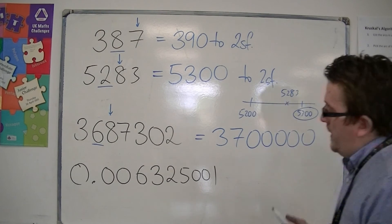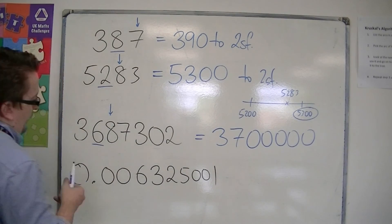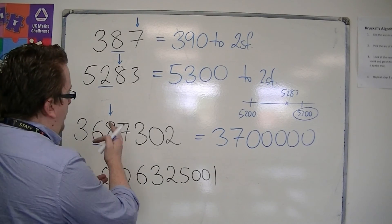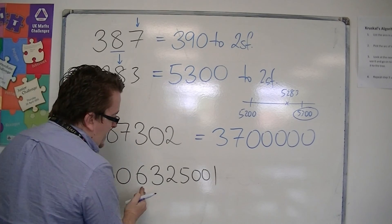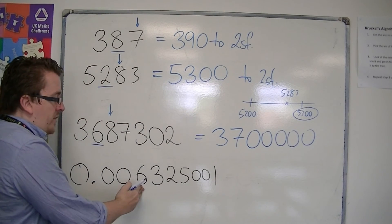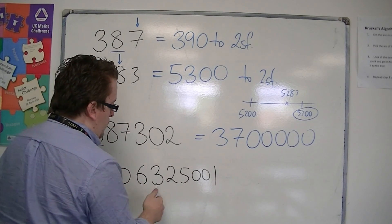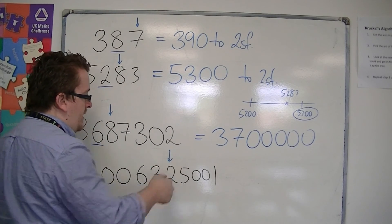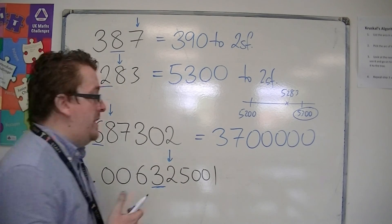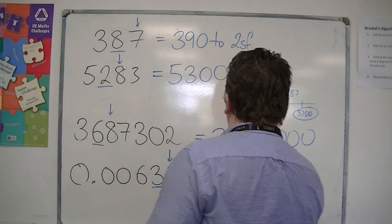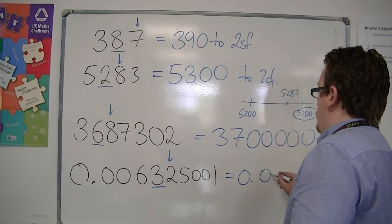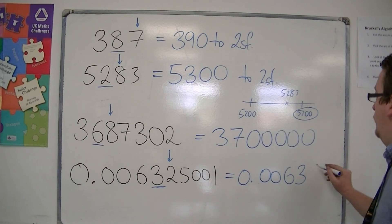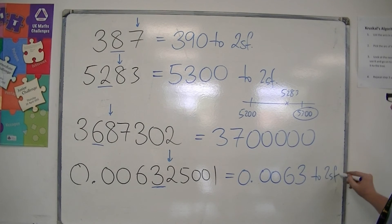And then finally, for the last example to two significant figures: ignore all the zeros at the beginning. Six is the first significant figure, then three is the second. One to the right is a 2, so I round down to 0.0063 to two significant figures.